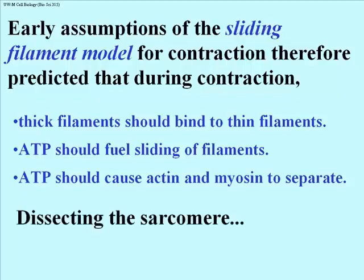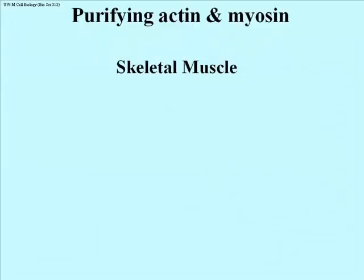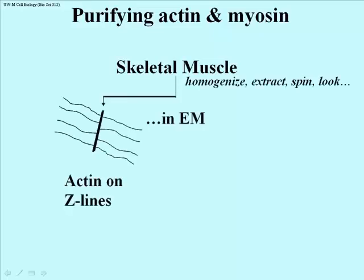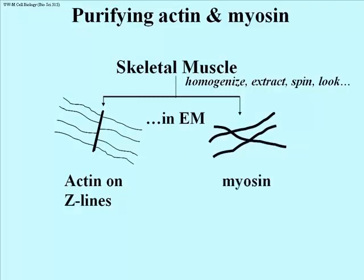How was this eventually shown? It began with an attempt to separate or fractionate muscle cells into their components in order to see how the components interact — in other words, dissecting the sarcomere. In the process, purifying actin, or at least partially purifying actin and myosin. You start with skeletal muscle, homogenize it, do a little extraction, begin to purify proteins one from another, spin in a centrifuge to separate parts based on mass, and look in the electron microscope.